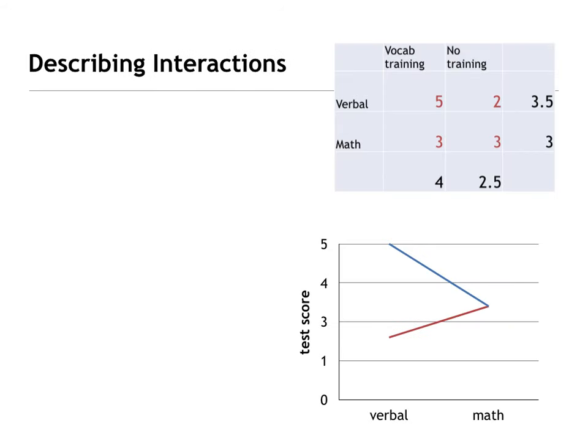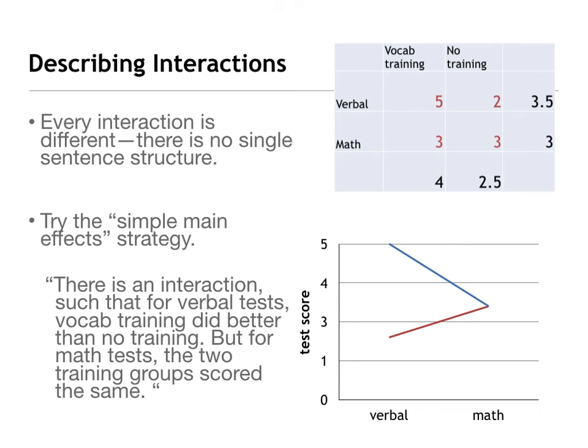Back to our vocabulary training example. Every single interaction is different — there's no single sentence structure. You can try a simple main effect strategy: describe the main effect for one independent variable but put that caveat in the middle. There's an interaction such that for verbal tests, vocabulary training did better than no training. But for math tests, the training groups scored the same. We've described both levels of vocabulary training and put that caveat — however, but, something depends on the other — in the middle.